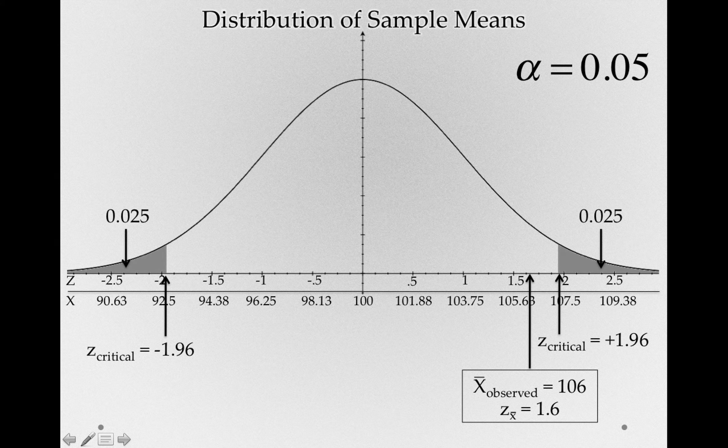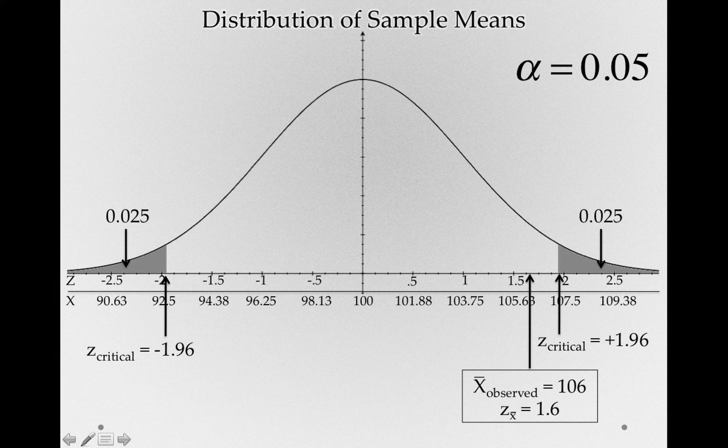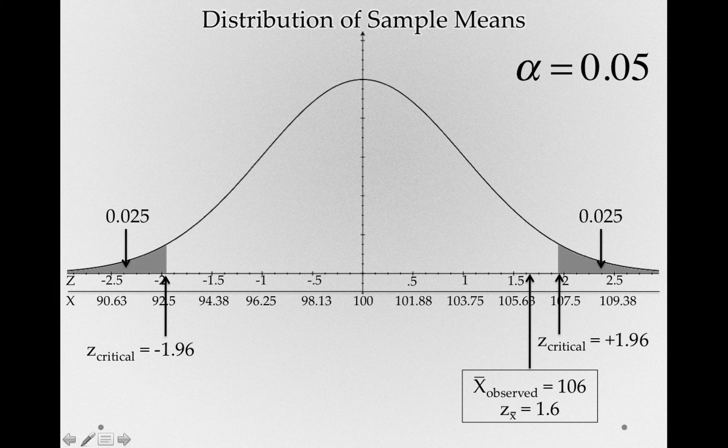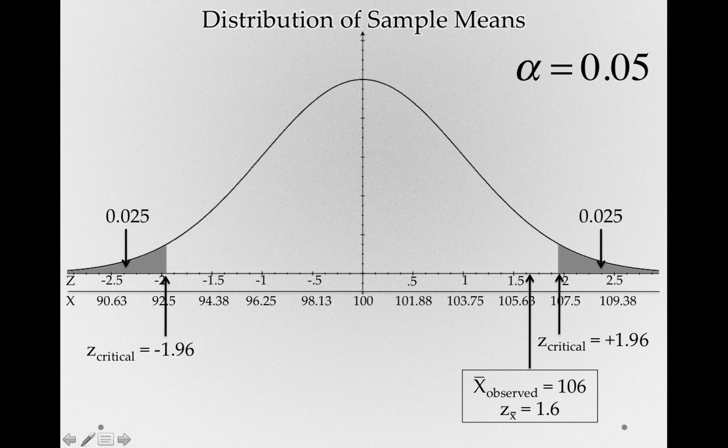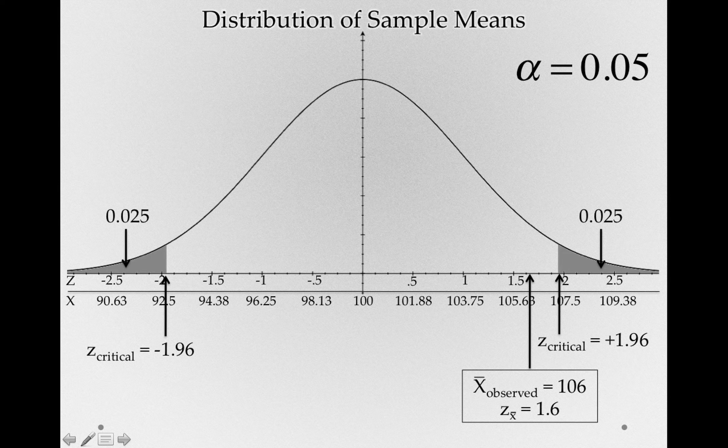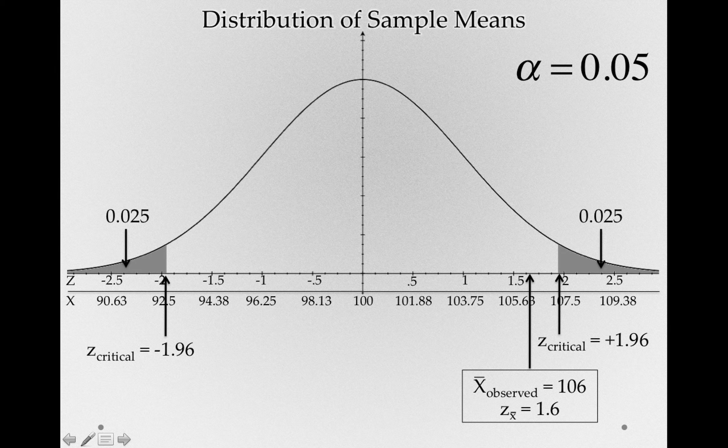In other words, it's perfectly reasonable that sampling error alone could have returned us our sample mean. Now this isn't saying that the null hypothesis is true. It's simply saying we do not yet have evidence enough to reject as reasonable the null hypothesis as the explanation for that difference.